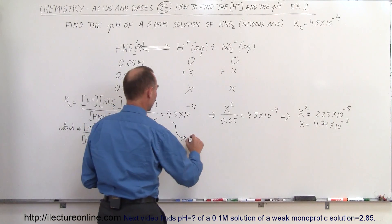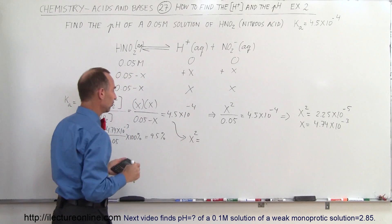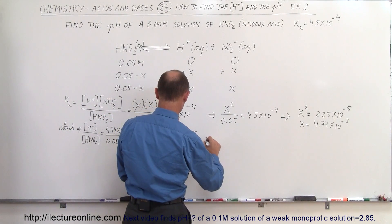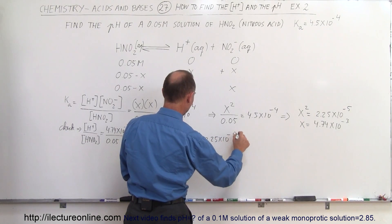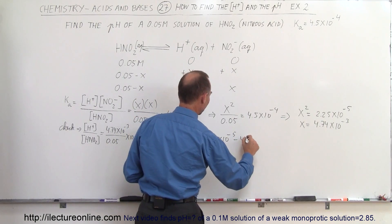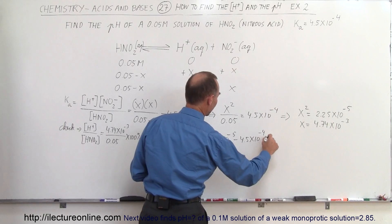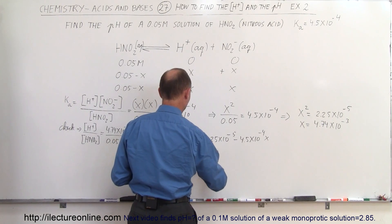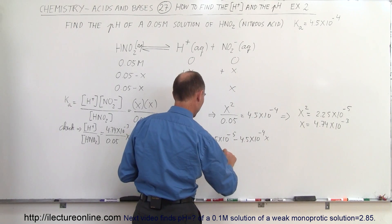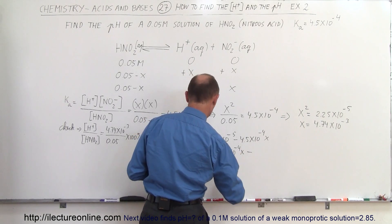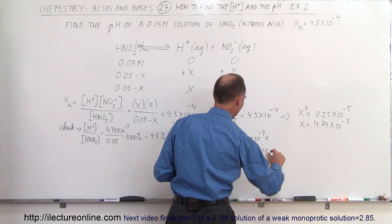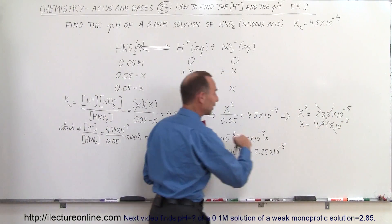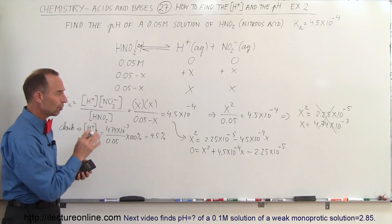Without the simplification, X squared equals 4.5×10⁻⁴ times 0.05, which is 2.25×10⁻⁵, minus 4.5×10⁻⁴ times X. Rearranging into standard form: 0 equals X squared plus 4.5×10⁻⁴ X minus 2.25×10⁻⁵. That is the quadratic equation we need to solve for X — the simplified approach is not valid here.